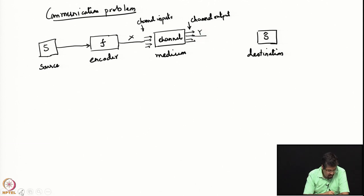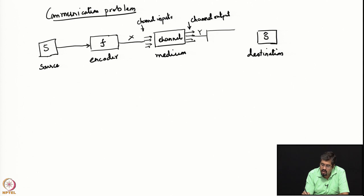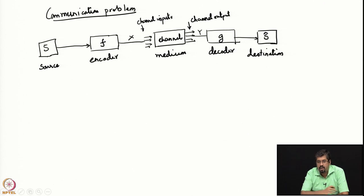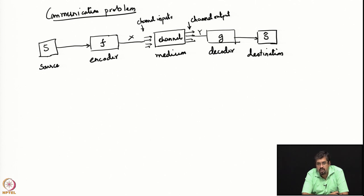In that case, y has to again undergo another adapter. That second thing here is what is called a decoder — let us denote that by g. You have a decoder at the other end of the channel which takes the output of the channel and maps it to something valid at the destination.